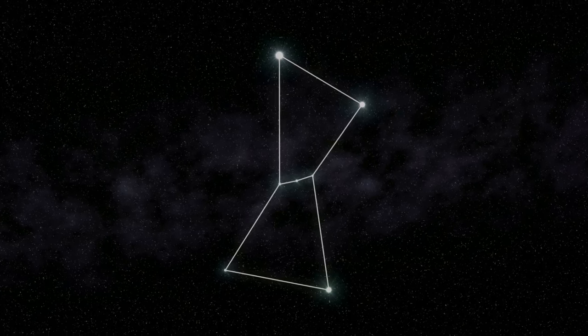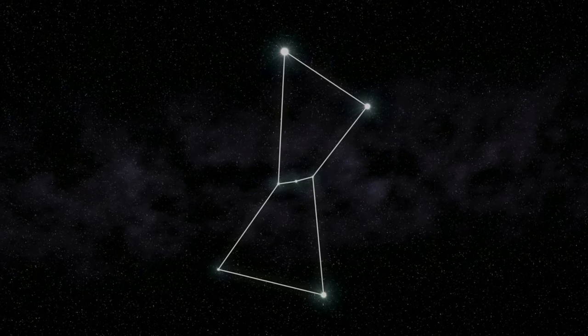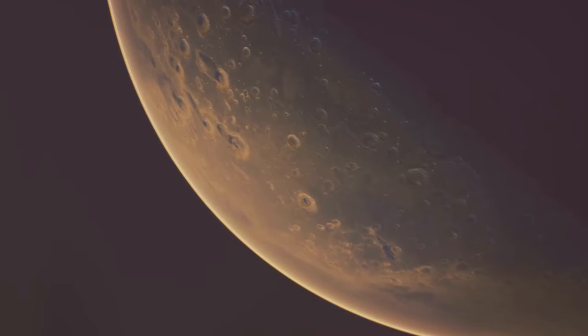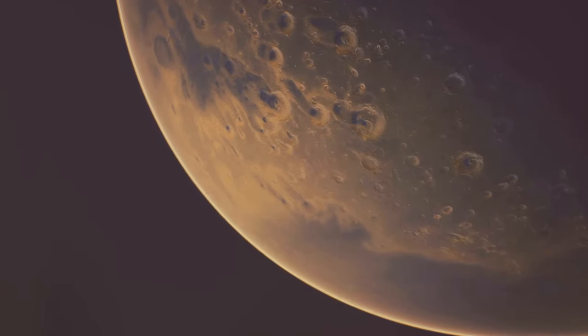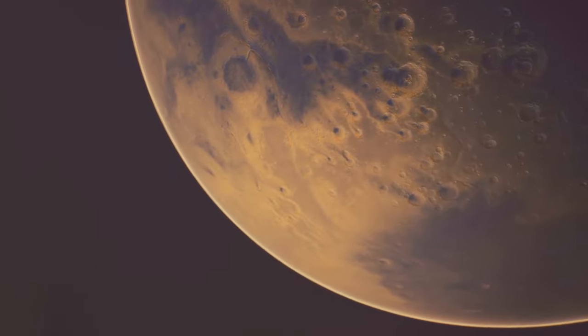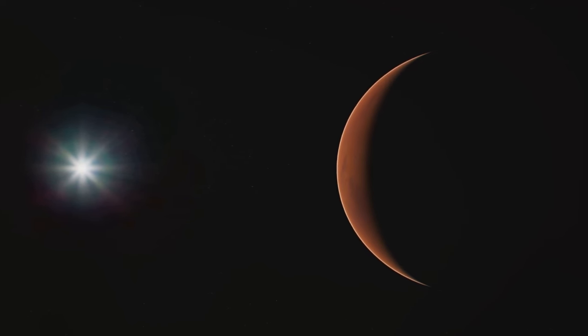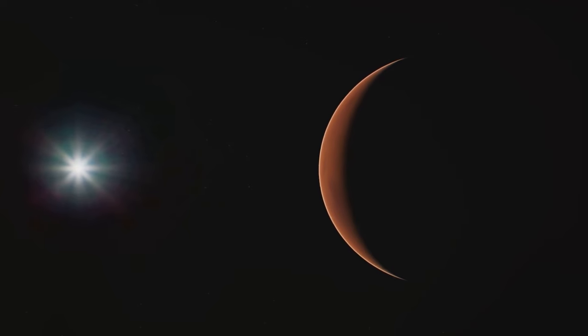You might also spot planets, which, unlike stars, don't twinkle. They appear as bright, steady lights moving across the sky. Mercury, Venus, Mars, Jupiter, and Saturn can all be seen with the naked eye under the right conditions.